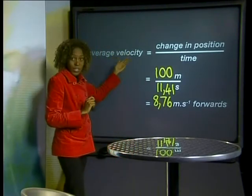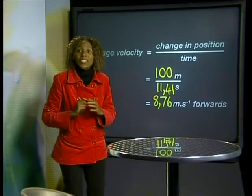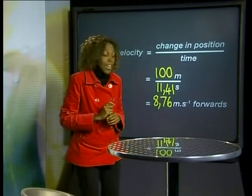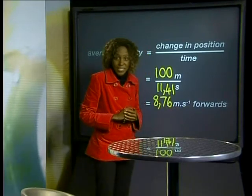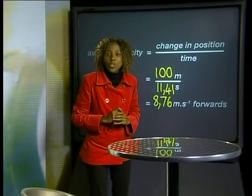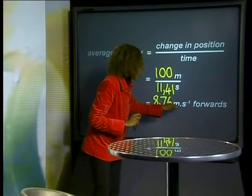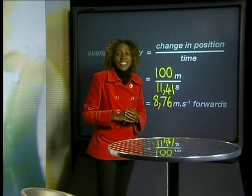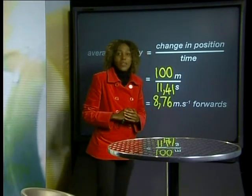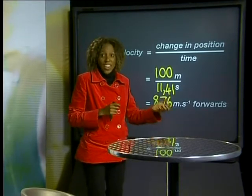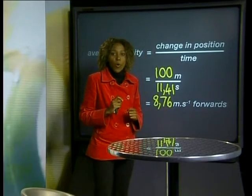His velocity was 8,76 meters per second. Notice that the unit of measurement for velocity is meters per second. Meters and seconds are SI units, so the SI unit of velocity is meters per second. We write the symbol for this unit of measurement as m·s⁻¹. The m stands for meters and the s stands for seconds. The dot shows the m and the s are separate units, not one unit ms. The minus 1 stands for 'per'.